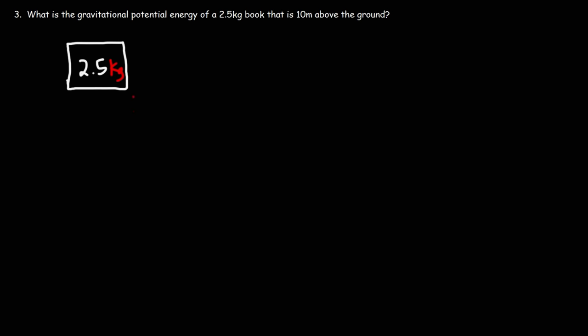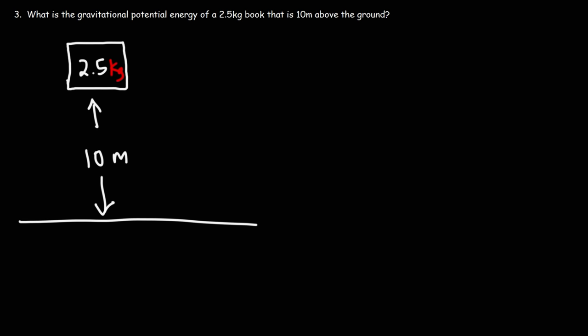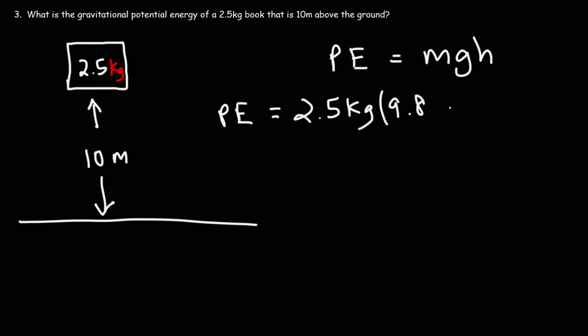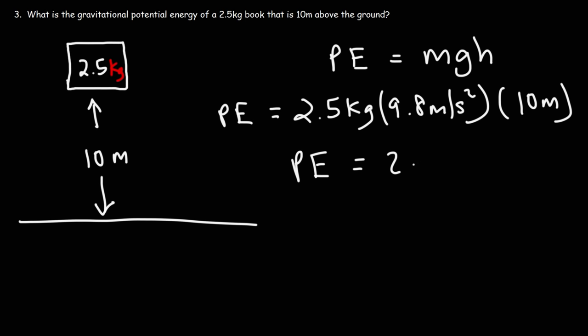Problem three: What is the gravitational potential energy of a 2.5-kilogram book 10 meters above the ground? Using PE = mgh: mass is 2.5 kg, gravitational acceleration is 9.8 m/s², and height is 10 meters. So 2.5 × 9.8 × 10 = 245 joules. That's the gravitational potential energy of the book 10 meters above the ground.